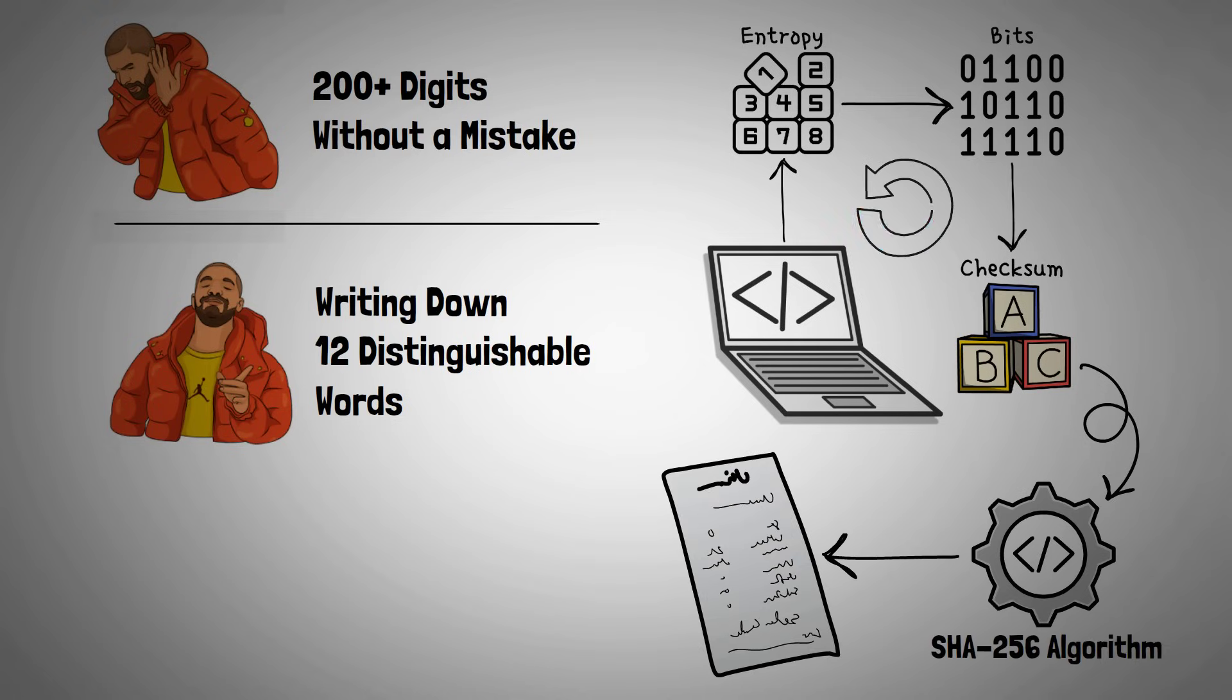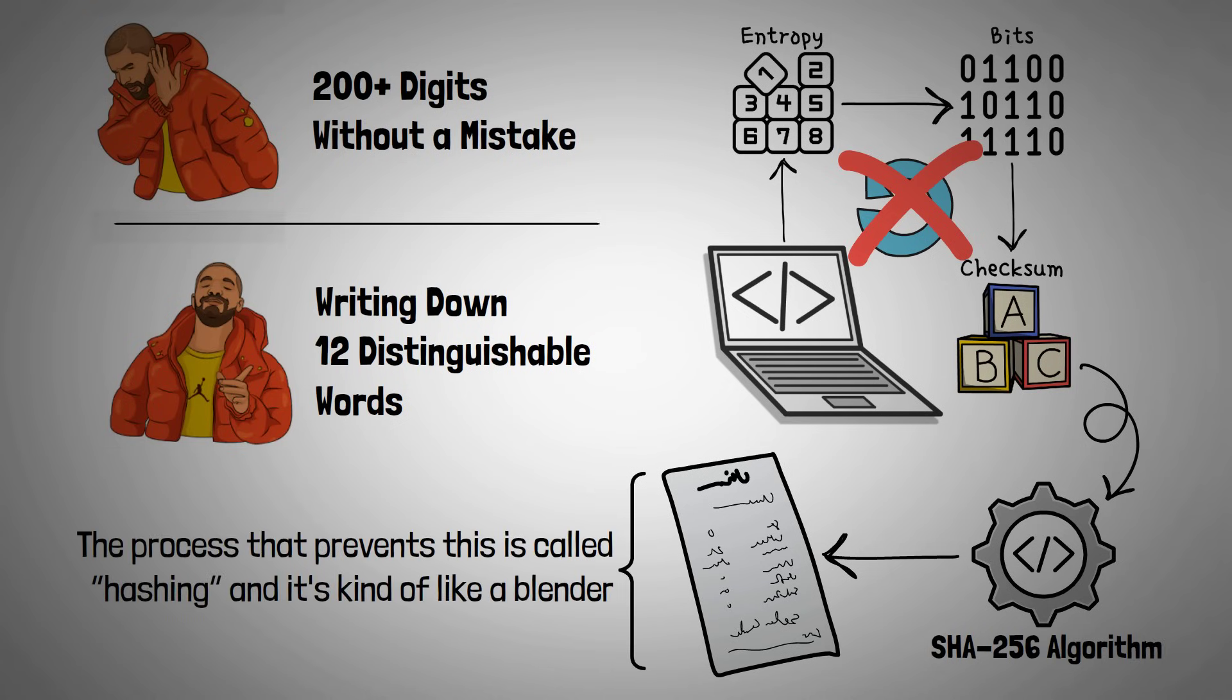However, this is not backwards compatible. If you take the seed and try to guess what the mnemonic is, you won't get it. The process that prevents this is called hashing, and it's kind of like a blender. It mixes up things well so that you can't unblend them. This keeps your crypto safe so only you can control it.